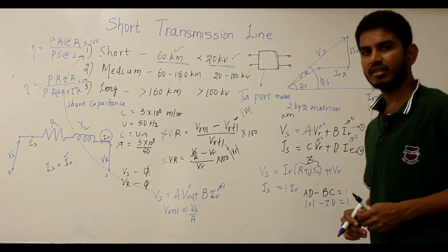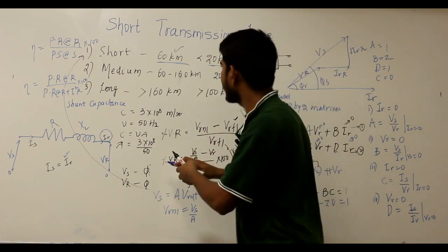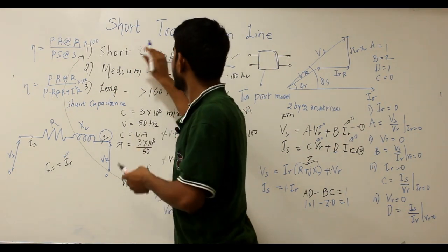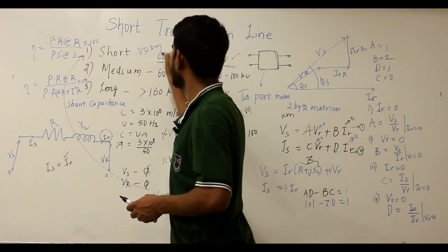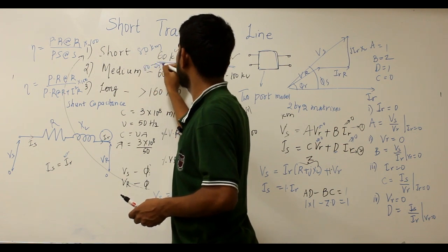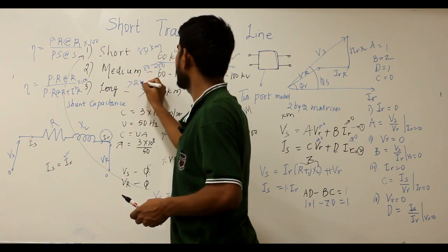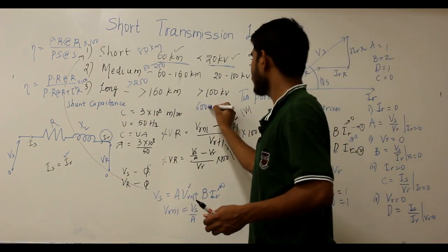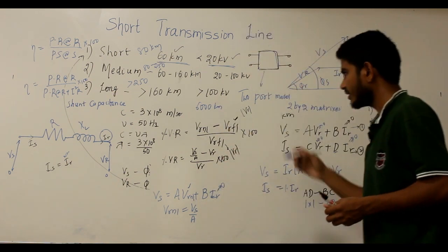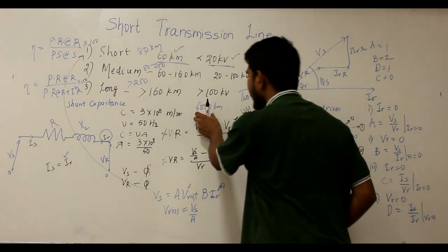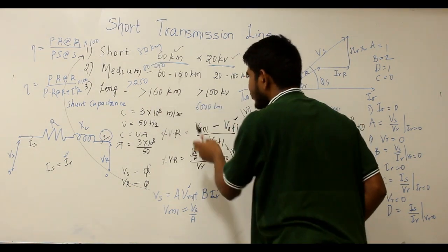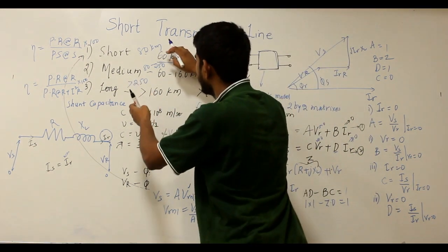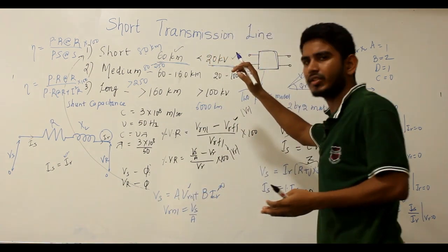This is all about the short distance transmission line. Note that in some books, the short distance line is defined as up to 80 kilometers, medium as 80 to 250 kilometers, and long as greater than 250 kilometers. However, since all these line lengths are very small compared to the 6000 kilometer wavelength, you can use either 60 or 80 kilometers as the standard depending on the reference you are following.